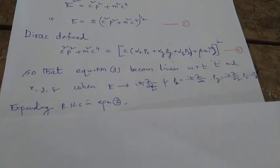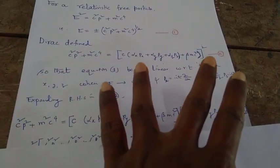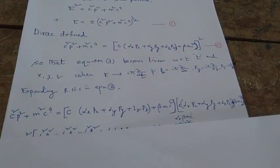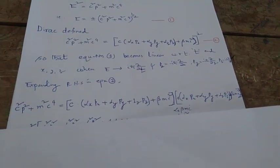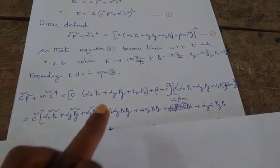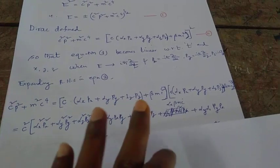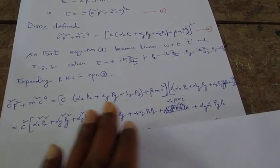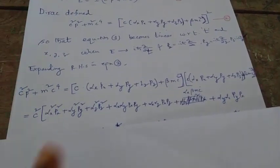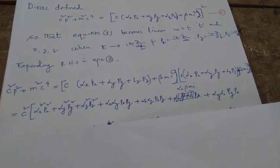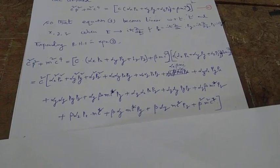If you expand the right-hand side of equation 2 by squaring the thing in the square bracket, multiply the bracket with itself, and write c² as a common factor, keeping the order intact, it will include all these cross terms.